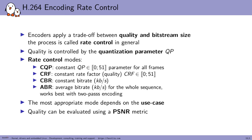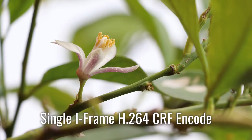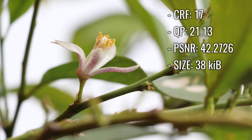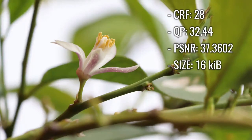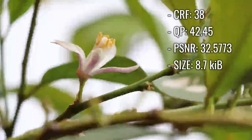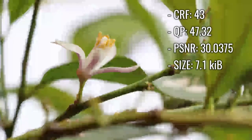Now I'm going to show a video where we use CRF mode and just increase CRF, worsening the quality as time goes. We're going to look at the QP, the signal-to-noise ratio, and the size of that single frame encode. Starting from about 24, I can notice the difference. The quality is significantly worsening with each CRF increase. We can see the size getting lower and lower, but the quality is also really bad.